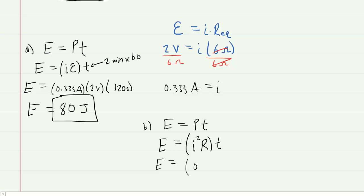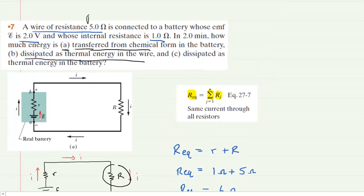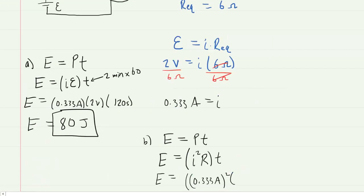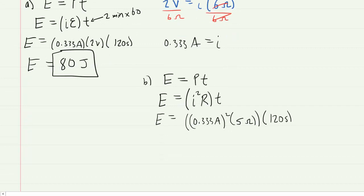So we plug in the current of 0.333 amps, and don't forget to square it. We'll multiply that by uppercase R, which is the resistance of the wire, and that was the 5 ohms. And then again we'll multiply that by the 120 seconds of time that was given in the question. So we punch this into our calculators and we end up with 66.7. And this will also come out in joules.